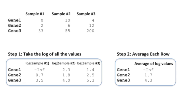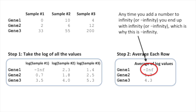The next thing that DESeq2 does is it averages each row. Anytime you add a number to infinity or negative infinity, you end up with infinity or negative infinity, which is why the average for gene 1 is negative infinity.